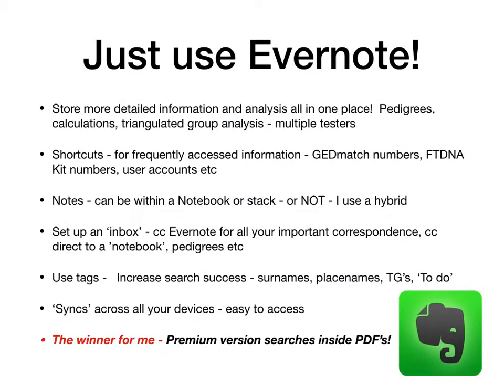Evernote stores everything in one place, and you always have everything at your fingertips no matter where you are because it's synchronised across all your devices. You can set up shortcuts for frequently used information — match numbers, kit numbers, etc. Set up an inbox where you can CC mail to, so you have a hybrid of folders where you store specific information and then an inbox which is really all your unsorted stuff. Use tags to increase your success in searches. And the winner for me was the premium version of Evernote, which allows you to search inside PDFs.